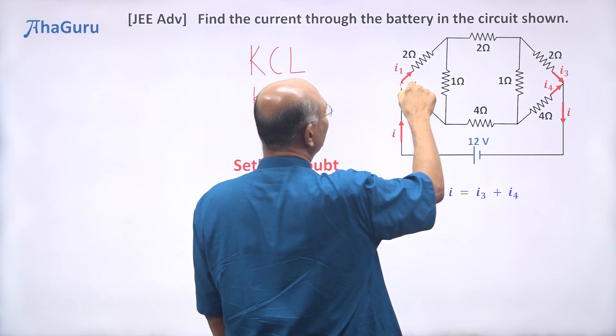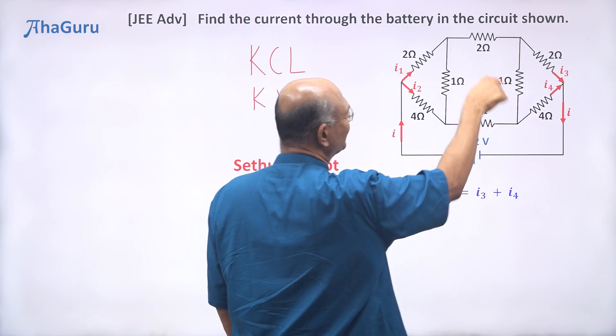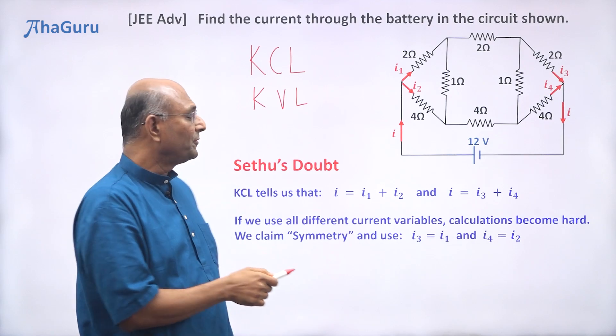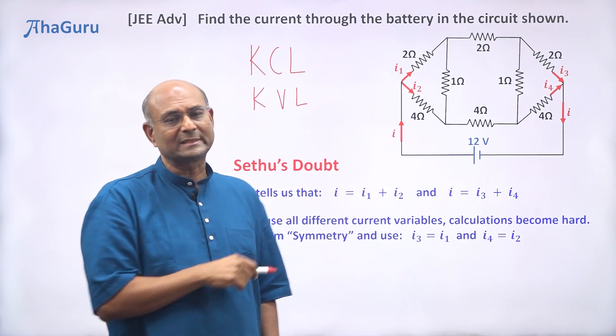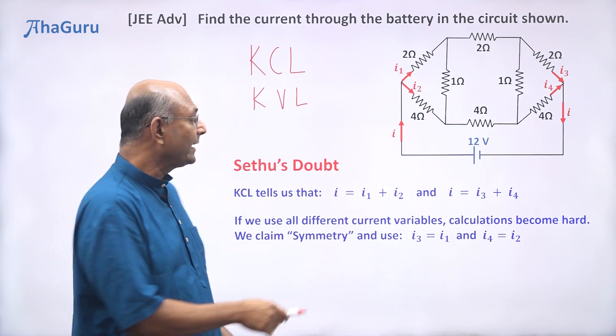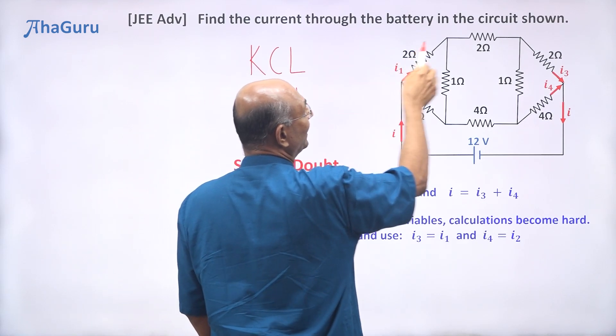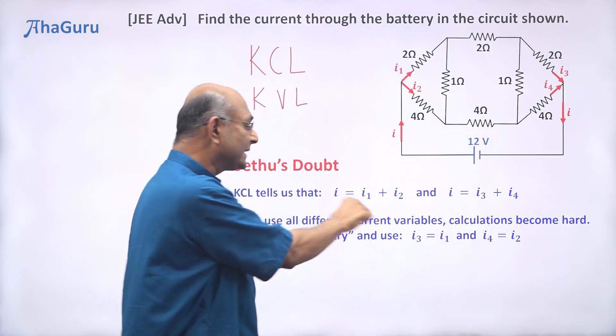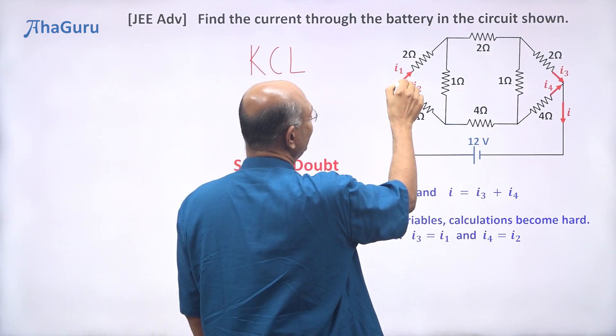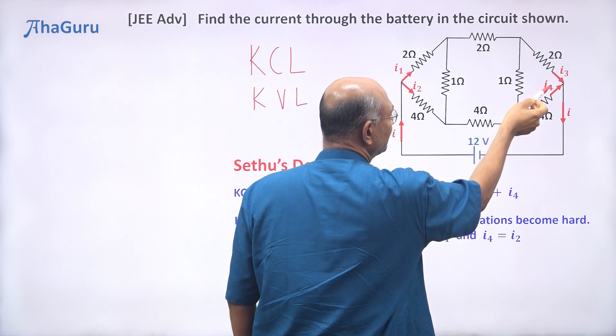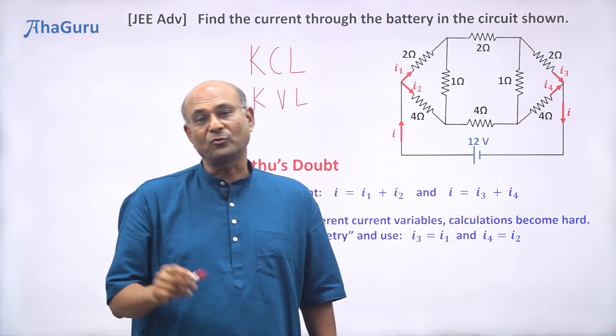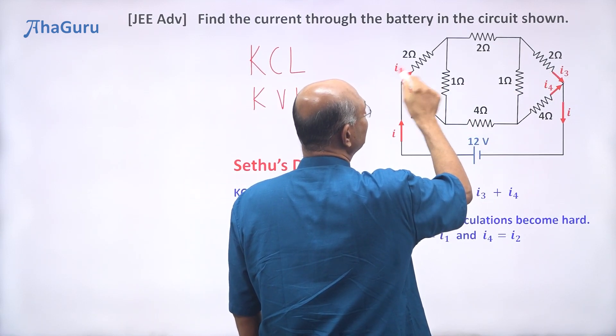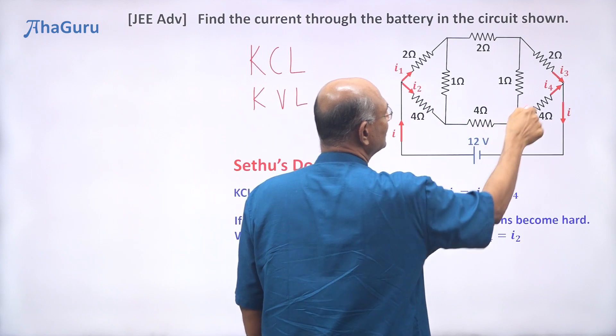But if I use different currents - I1, I2, I3, I4 - I'm going to end up with lots of complicated calculations. That's why we say, because of symmetry, if this is I1, that current must also be I1. So we say I3 must be equal to I1. And because of symmetry, if this is I2, this current must also be I2. That means I4 is equal to I2. We don't use two different currents here. We actually say, if this is I1, that is also I1. This is I2, this is also I2.